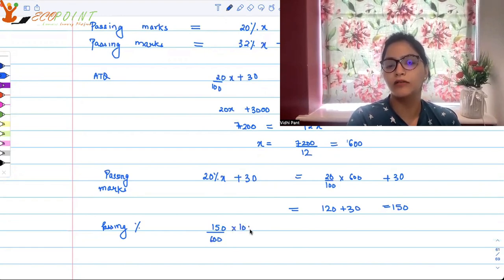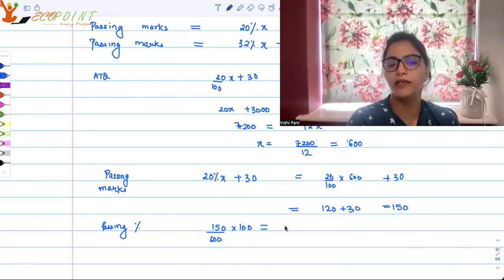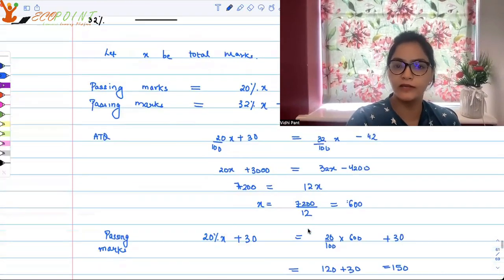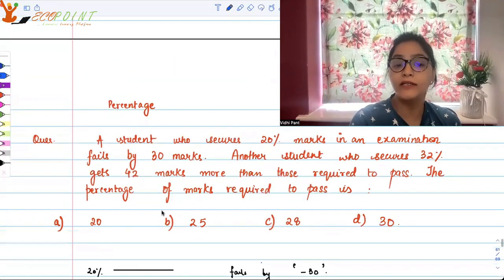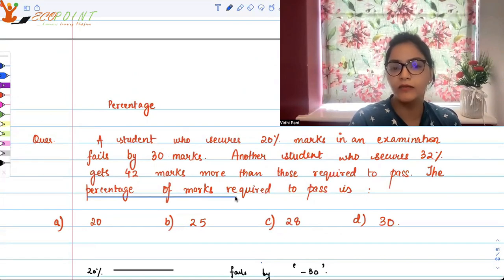150 marks out of 600 are required. So passing percentage is 150/600 × 100, which equals 25 percent. The passing percentage is 25 percent.